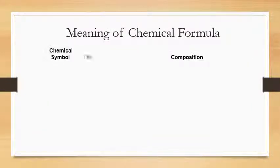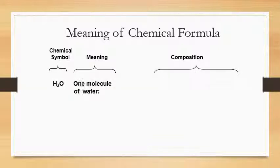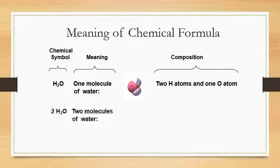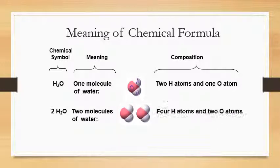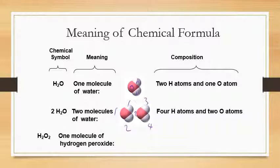What is the meaning of chemical formulas? Water's chemical symbol is H₂O — one molecule of water comprises two hydrogen atoms and one oxygen atom. 2H₂O means two molecules of water, giving four hydrogen atoms and two oxygen atoms. H₂O₂ means one molecule of hydrogen peroxide, which contains two hydrogen atoms and two oxygen atoms.